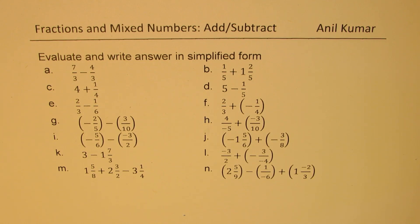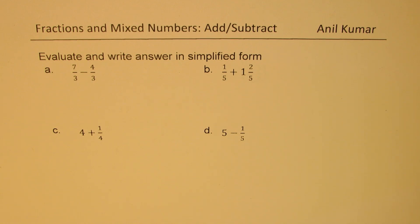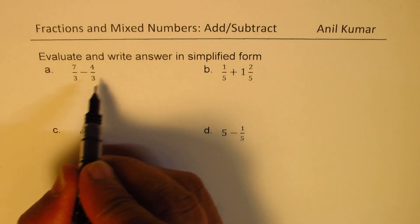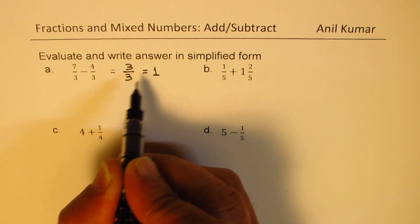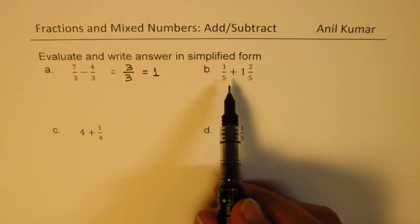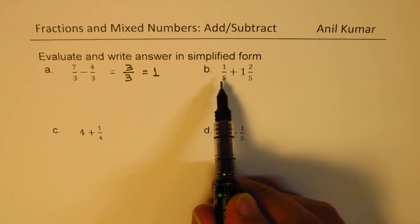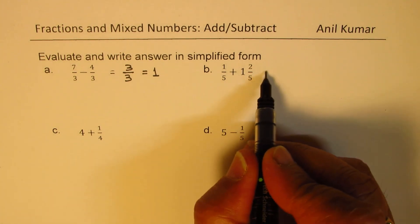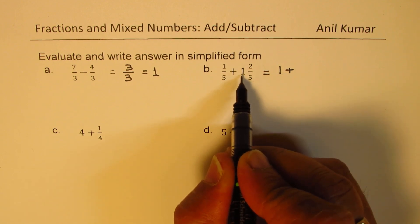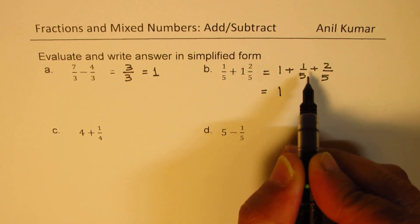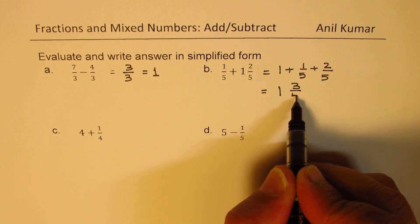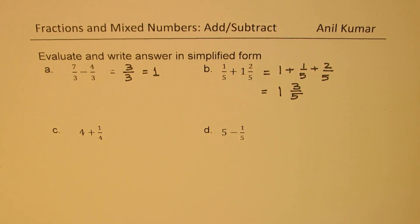Let's begin to solve them one by one. You can always pause and then answer these questions before looking into my solutions. We'll begin with parts A and B, where we have a common denominator. The first one is 7 over 3 minus 4 over 3. Since the denominators are common, we can write straight away 7 minus 4, which is 3 over 3. Now 3 over 3 is 1, so we get 1 as our answer. In the second one, we have to add fractions — an improper with a proper fraction, same denominator. You could think about writing this as 1 plus 1 over 5 plus 2 over 5, so that is 1 whole and 1 plus 2 is 3 over 5. So that becomes the result of this particular addition.